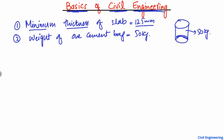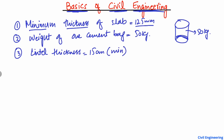The third point is the lintel beam thickness. The lintel beam thickness is usually 15 centimeters. This is the minimum requirement for lintel thickness — it should be equal to 15 centimeters.